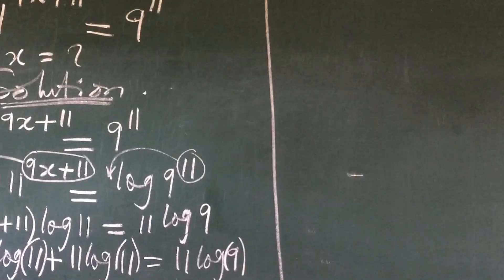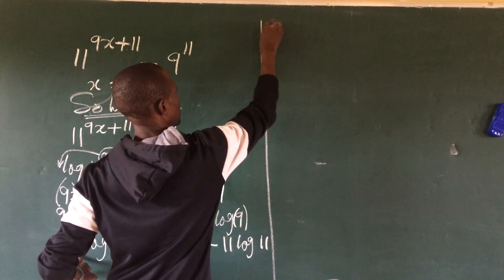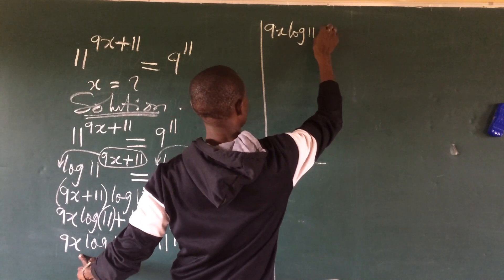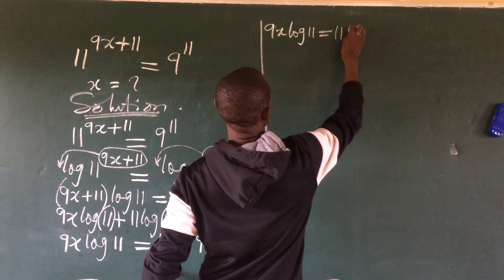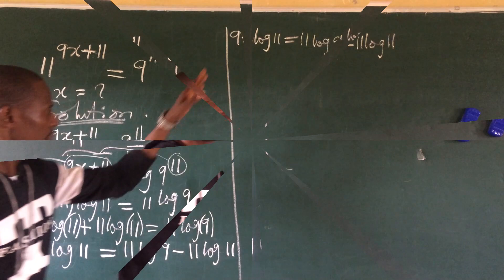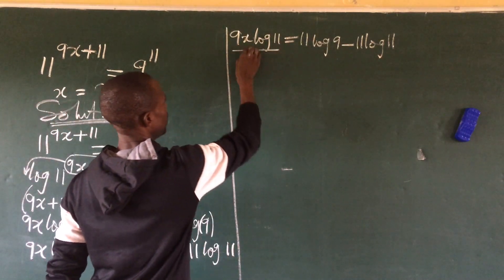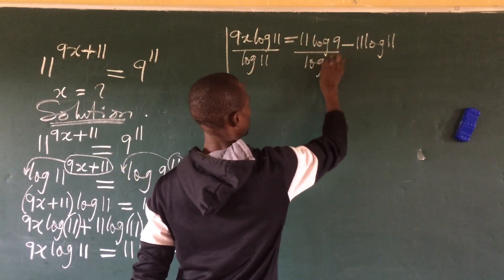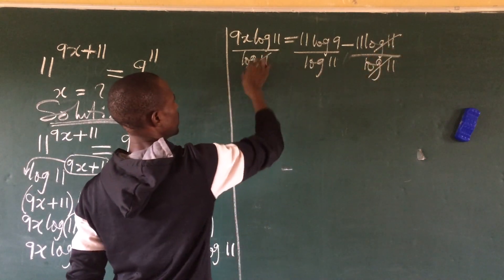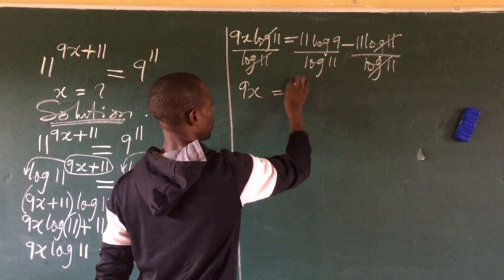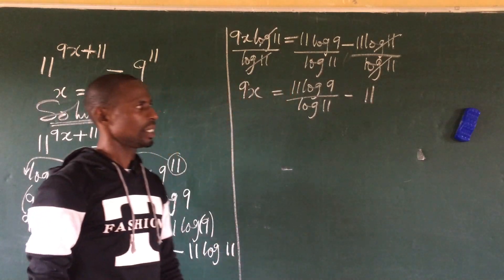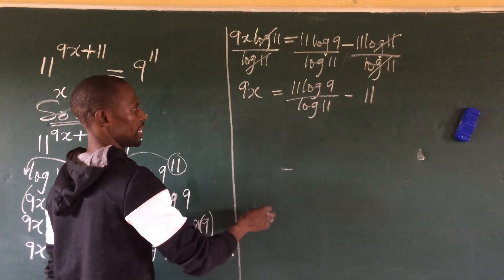Continuing, we have x times log 11 equal to 11 log 9 minus 11 log 11. Now we divide both sides by log 11, so log 11 cancels on the left. This gives us: 9x equals 11 log 9 over log 11, minus 11.